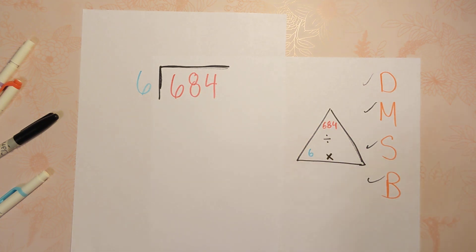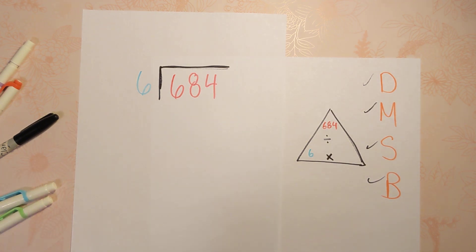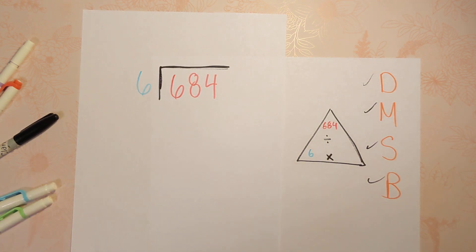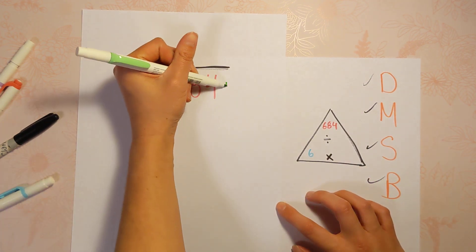Do you want to skip count your sixes till you get to 684? 6, 12, 18... you could, it would take a very long time. So we've got some steps, some kind of shortcuts to do that. All right, this number, the one that's getting divided up, is called the dividend.